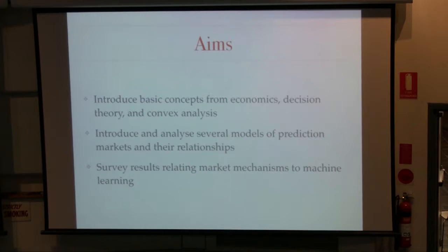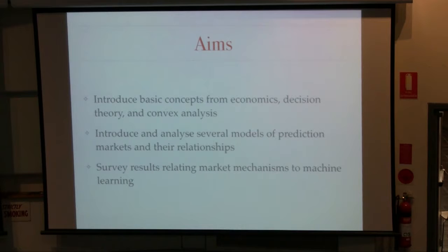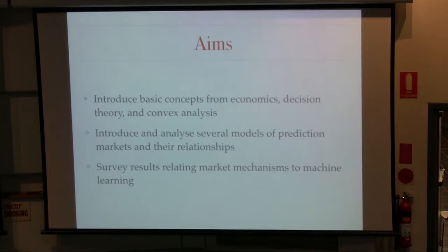For this talk, I'm hoping to give you enough background so that when you finish this tutorial and you're still interested, you could potentially pick up some of these papers and make sense of them. I'm going to introduce some basic concepts from economics, decision theory, and some convex analysis, then look at three different models of prediction markets and describe the relationships between them. At the end I'll talk about some very recent work from the computer science and machine learning community that says interesting things about how these markets work. Feel free to jump in with questions at any point.